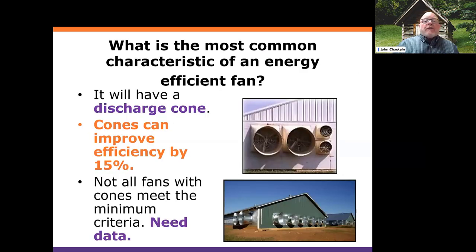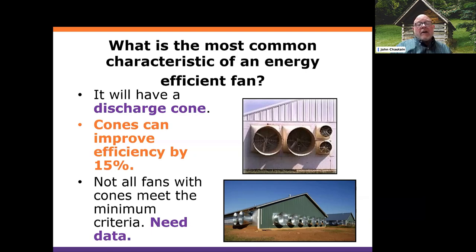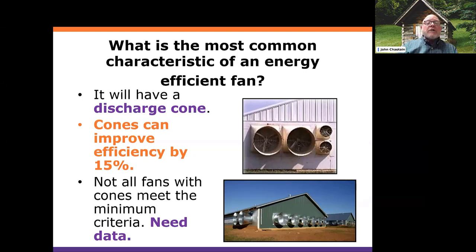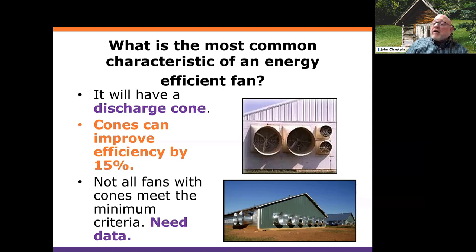What does an energy efficient fan look like? A basic characteristic is that it will typically have a discharge cone — that's what you're seeing in these pictures: some nice shiny galvanized ones and some old plastic ones. Several years ago we did a paired comparison using BESS Lab data, testing a fan with the exact same shutter and housing both with and without the cone. On average, the cone improved efficiency — the VER number — by 15% at one-tenth of an inch static pressure. However, not all fans with cones meet the minimum criteria we're going to talk about.